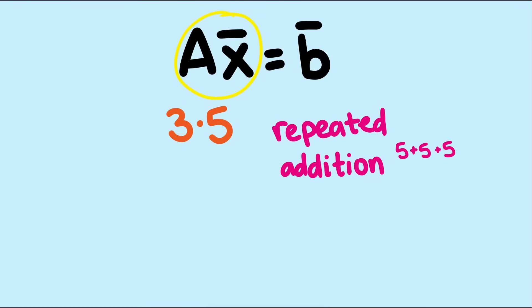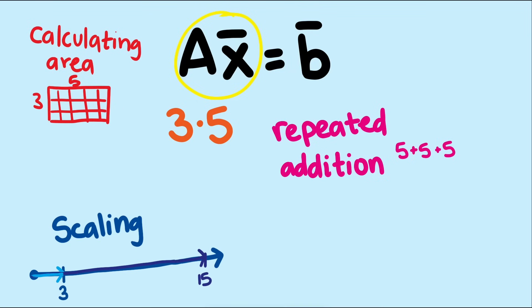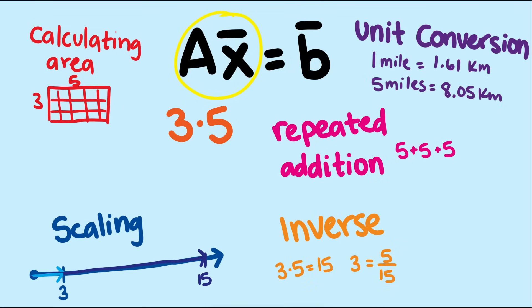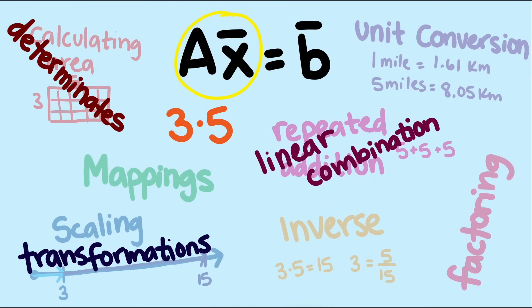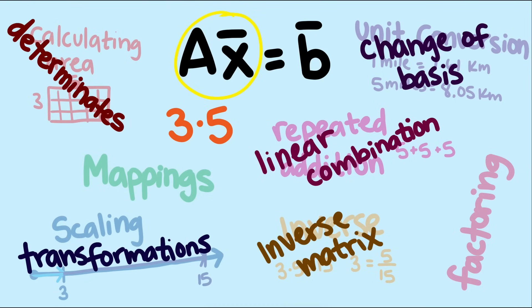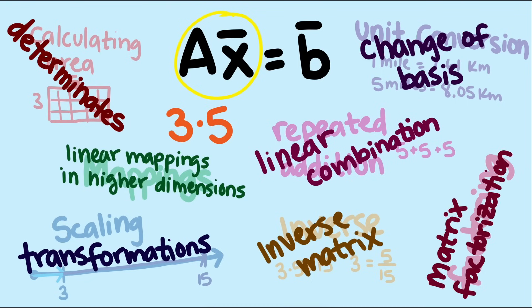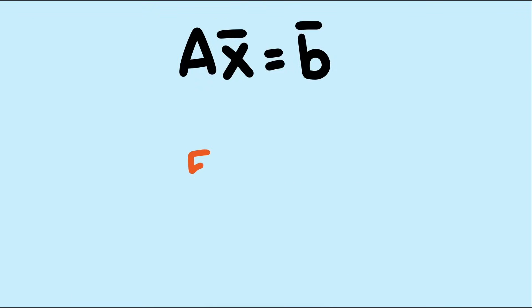It's repeated addition. It's calculating area. It's scaling a number line. It's an inverse operation of division. It's unit conversions, and even mappings between values. And in slightly more advanced cases, we use factoring to solve algebraic equations dealing with products. Each of these ideas shows up again in linear algebra, but in new, nuanced, and more complicated ways because we're dealing with higher dimensions and packets of numbers now.